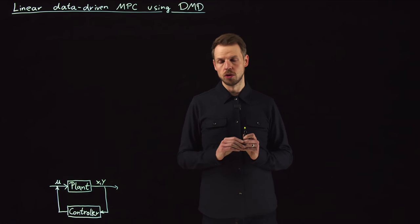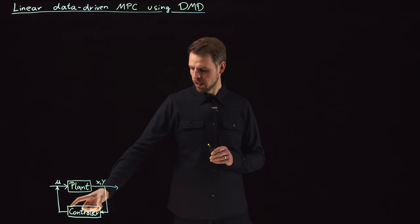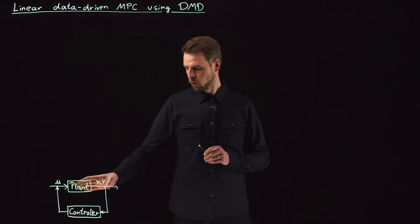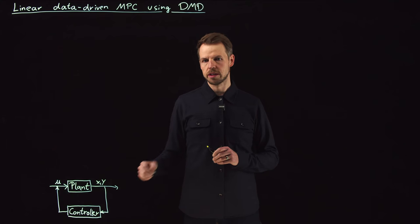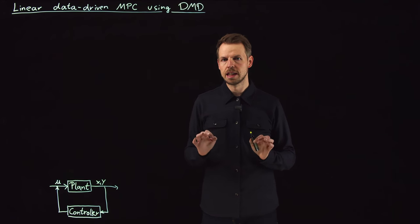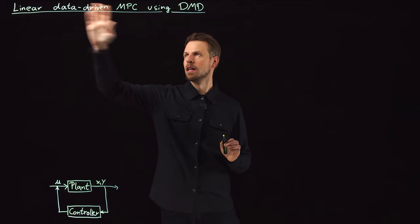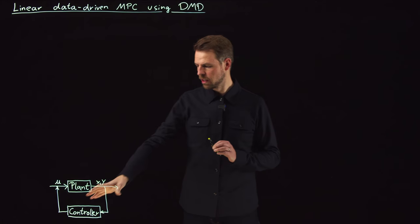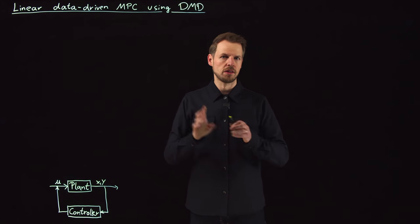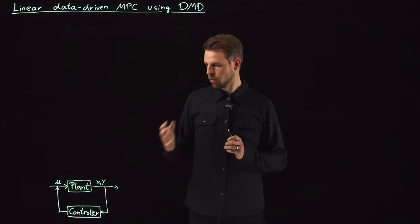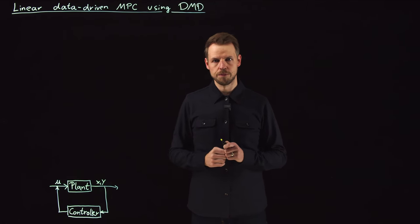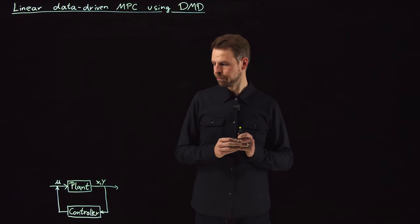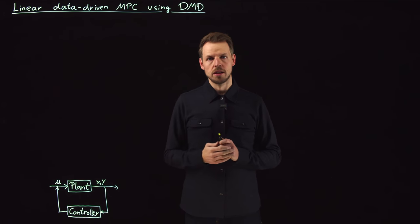And what we did in model predictive control is we used a system model and then we did open-loop control based on the system model. The case we considered was a linear model, which is why we consider linear MPC here. We solved this linear system that we derived to determine the optimal feedback signal and then we fed this back into the plant, the system that's running at the same time, and this way determine the feedback law.